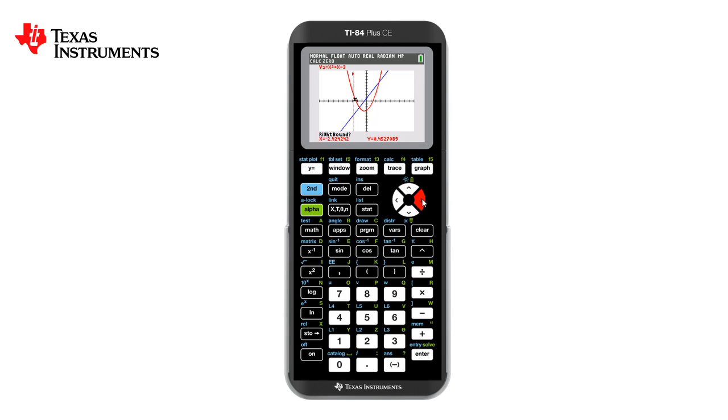It next asks us to move to the right bound. Using the arrow keys again and the enter button, we now have a region where the zero is. We don't need to guess so we just press the enter key again and it will give us the zero value.